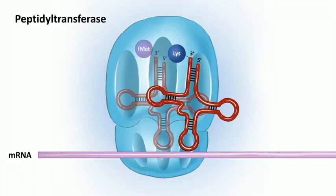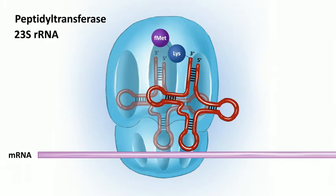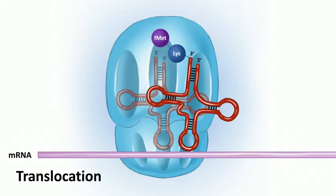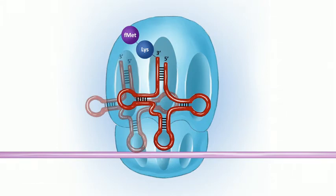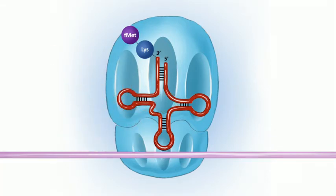In prokaryotes, this peptidyl transferase activity is found in the 23S ribosomal RNA within the 50S subunit — it's a type of ribozyme, an RNA enzyme. The 23S rRNA transfers the peptide from the P site over to the amino acid on the tRNA in the A site. The next step, still part of elongation, is translocation: the ribosome complex moves down the mRNA three nucleotides, moving the tRNA with the growing polypeptide from the A site to the P site, and moving the uncharged tRNA from the P site to the E site, where it exits and can be recharged.